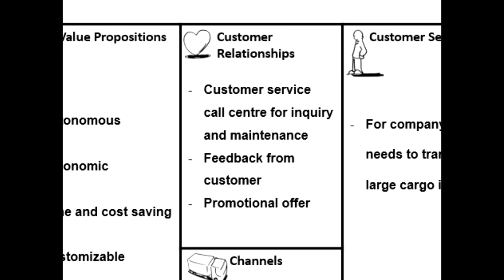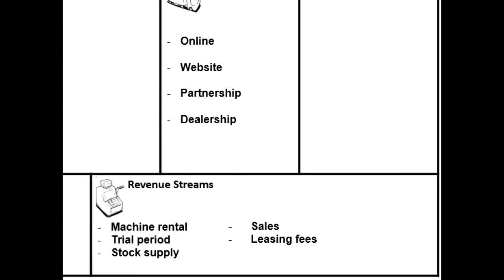The next block is revenue streams — the sources of revenue for a company. The questions to construct this block are: for what value are customers really willing to pay? What do they currently pay? What is the revenue model? And what are the pricing tactics? For the PickUpper, the revenue streams are machine rental, trial period, stock supply, sales, and lastly leasing fees.